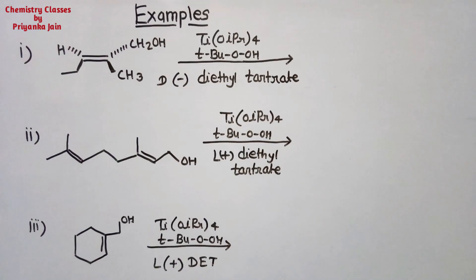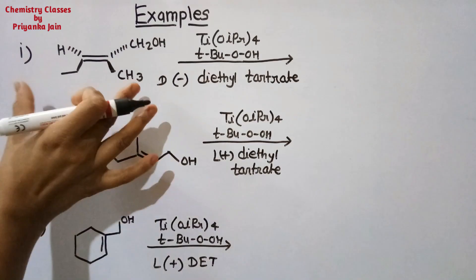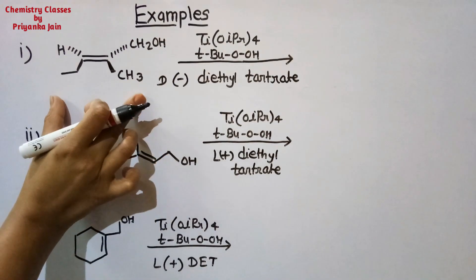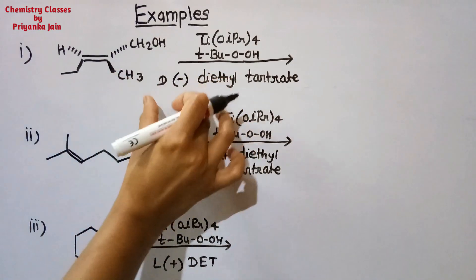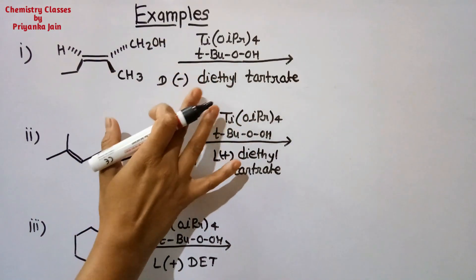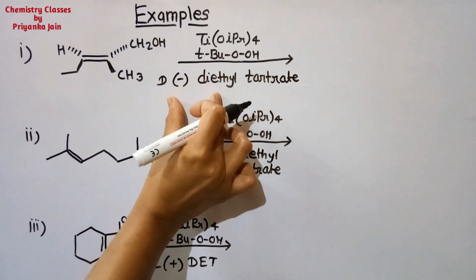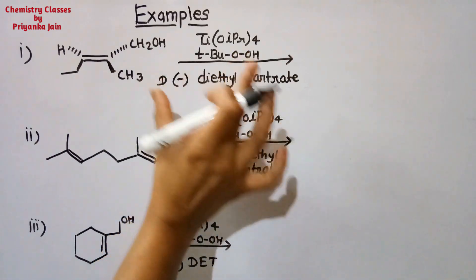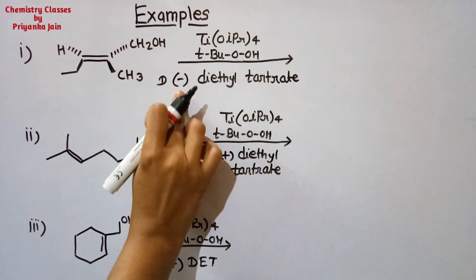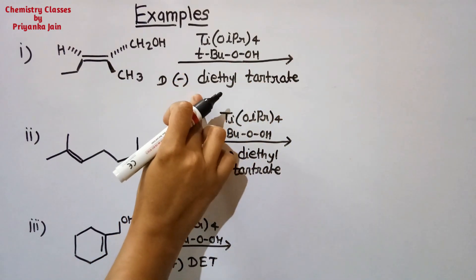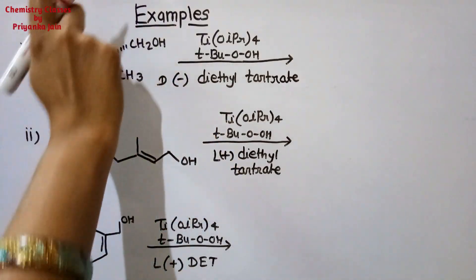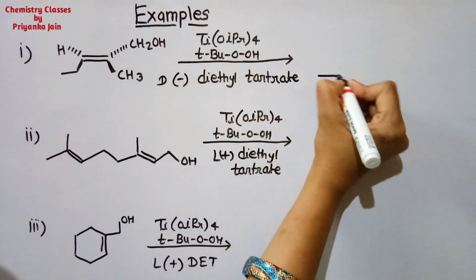Now let's see some examples. In the first example, we subject this molecule to Sharpless asymmetric epoxidation. We have taken (−) diethyl tartrate. When we take (−) diethyl tartrate, the ring is always formed above the plane.